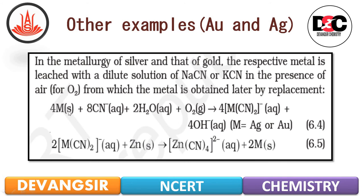The metal (M) reacts with cyanide ions, water molecules, and oxygen to give M(CN)2⁻ plus four hydroxide ions. Here M means silver or gold. Then, the product M(CN)2⁻ is treated with zinc metal — since zinc is more reactive than silver or gold, a displacement reaction takes place. The product is Zn(CN)4²⁻ and the metal M (silver or gold) is liberated.